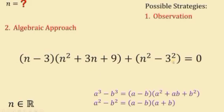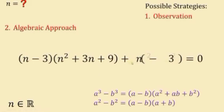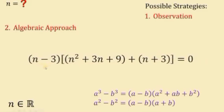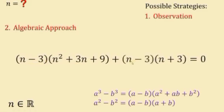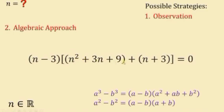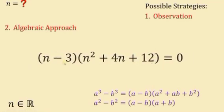We notice the common factor (n − 3), so we factor it out from both terms. Combining what remains: n² + 3n + 9 + n + 3 simplifies — 3n + n gives 4n, and 9 + 3 gives 12 — yielding (n − 3)(n² + 4n + 12) = 0.